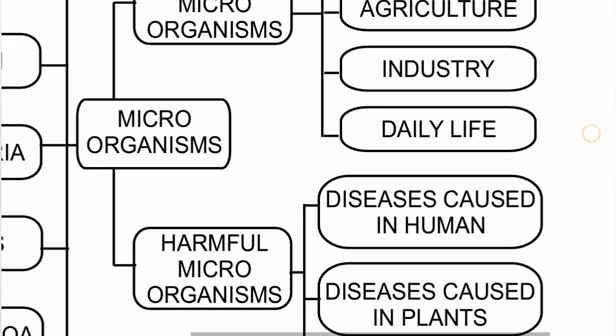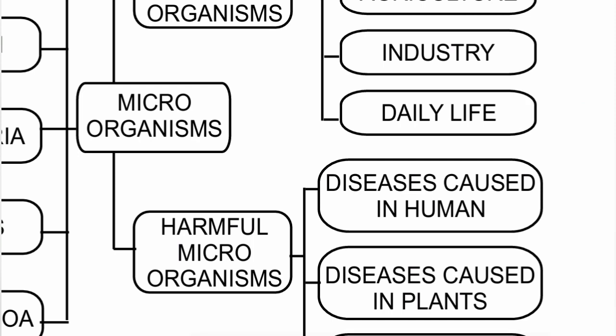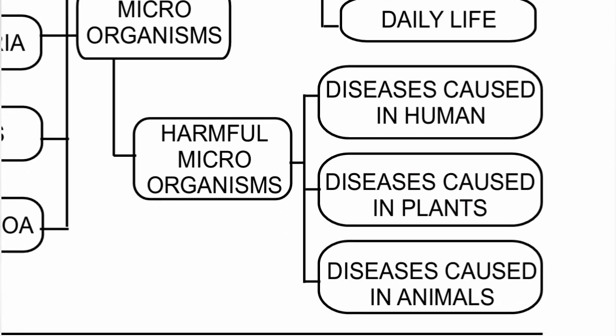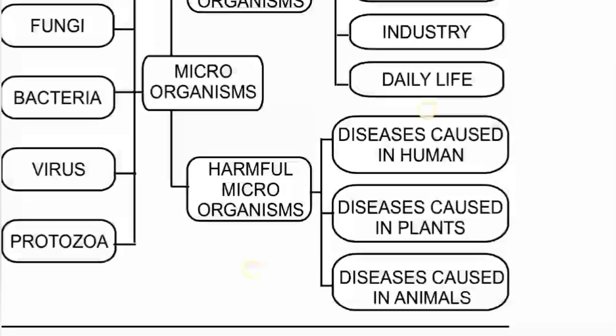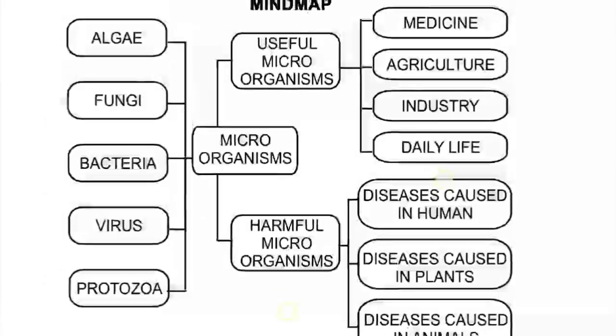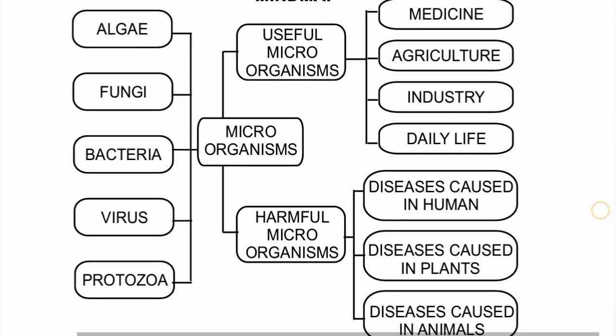Harmful microorganisms cause diseases in humans such as tuberculosis, cholera, common cold, rabies, amoebic dysentery, and malaria. Diseases caused in plants include citrus canker and potato blight disease. Diseases caused in animals include anthrax and foot and mouth disease. This completes the mind map of the microorganisms lesson.